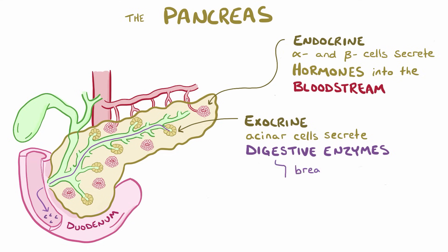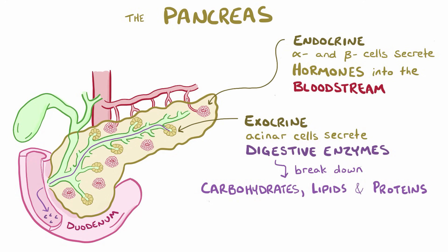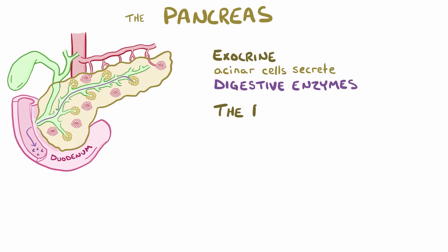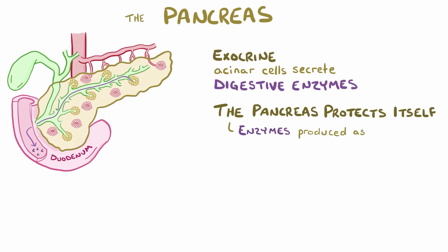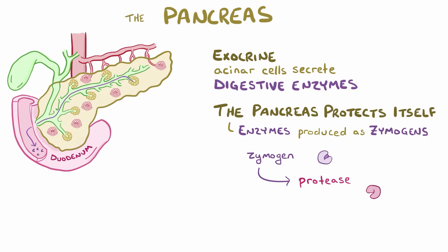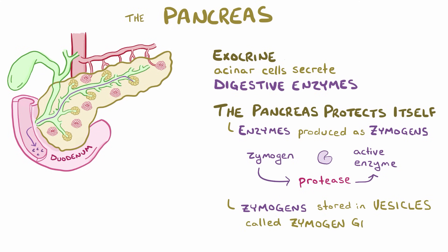These pancreatic digestive enzymes break down macromolecules like carbohydrates, lipids, and proteins found in food. But these macromolecules are also found in the cells of the pancreas. To protect the pancreas, the acinar cells manufacture inactive forms of the enzymes called proenzymes, or zymogens. These zymogens are normally activated by proteases which cleave off a polypeptide chain, which is kind of like pulling the pin out of a grenade. For additional security, the zymogens are kept away from sensitive tissues in storage vesicles called zymogen granules, and are packaged with protease inhibitors that prevent enzymes from doing damage if they become prematurely active.